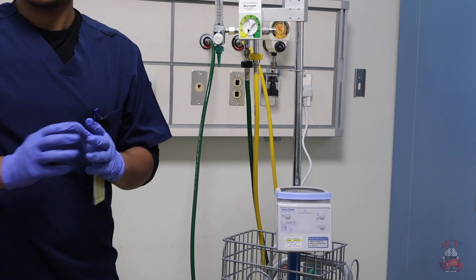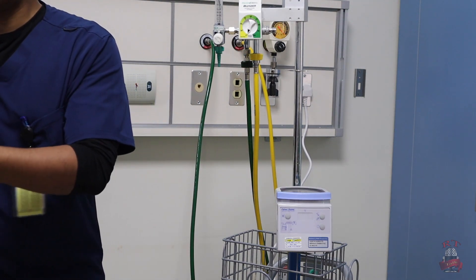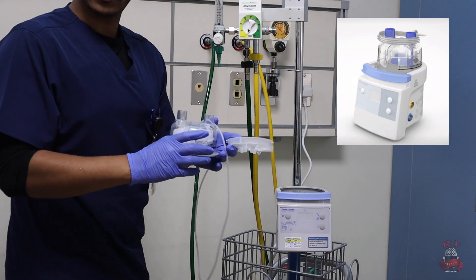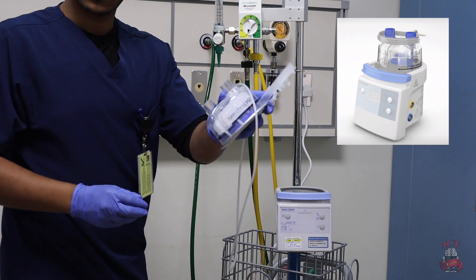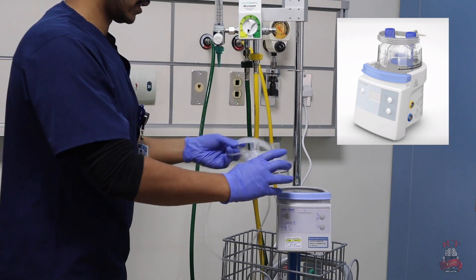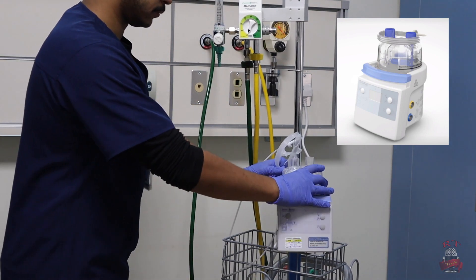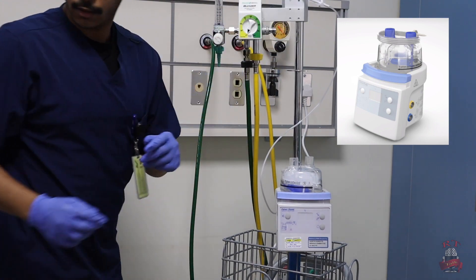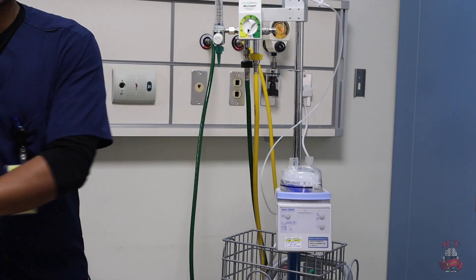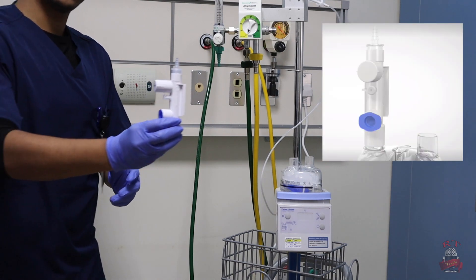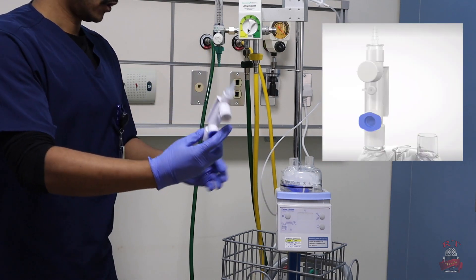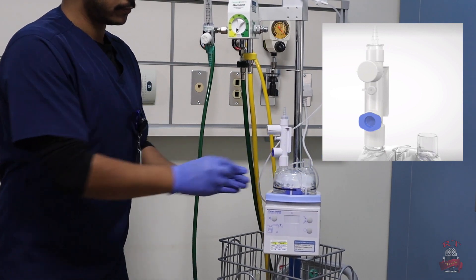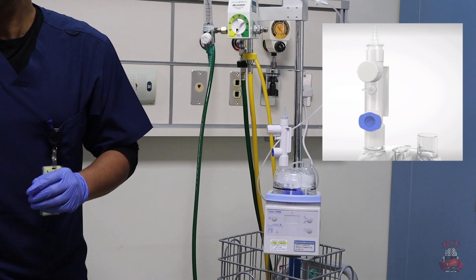After that, you will take your humidifier chamber from your bubble CPAP system kit, this one. You will insert it in the humidifier. Then you will take your pressure release valve, this one. You will put it on one side of your humidifier chamber.